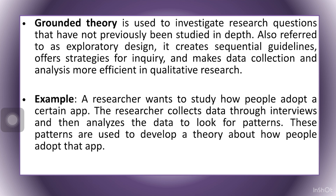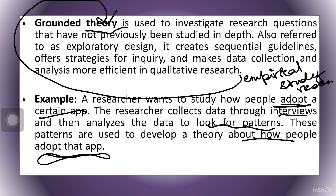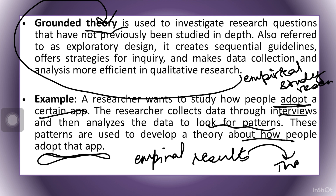The very first research design under qualitative research design is the grounded theory. In this, we try to develop theories out of empirical studies — whatever empirical research is available, we try to develop a theory from it. An example is a researcher who wants to know how people adopt a certain app: he collects data, analyzes the pattern, and then develops a theory about how people adopt that app. Whenever a theory is developed from empirical results, this is known as grounded theory.